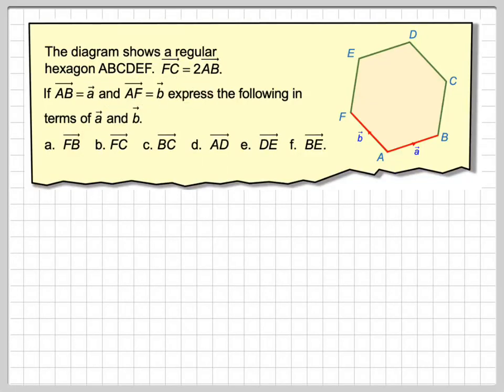Right, the diagram shows a regular hexagon ABCDEF. Vector FC is equal to two vectors AB, so this vector here is twice this vector here. And then if AB is equal to a, and AF is equal to b, express the following in terms of a and b.